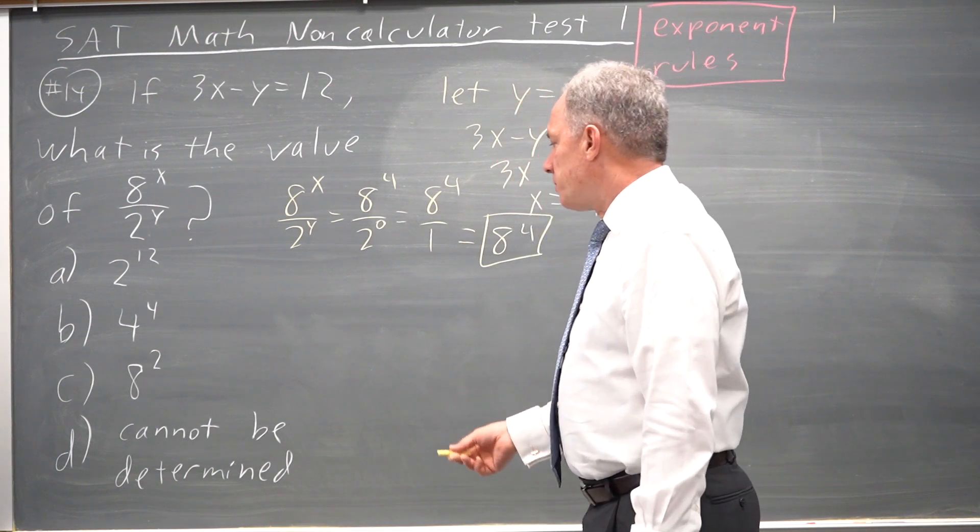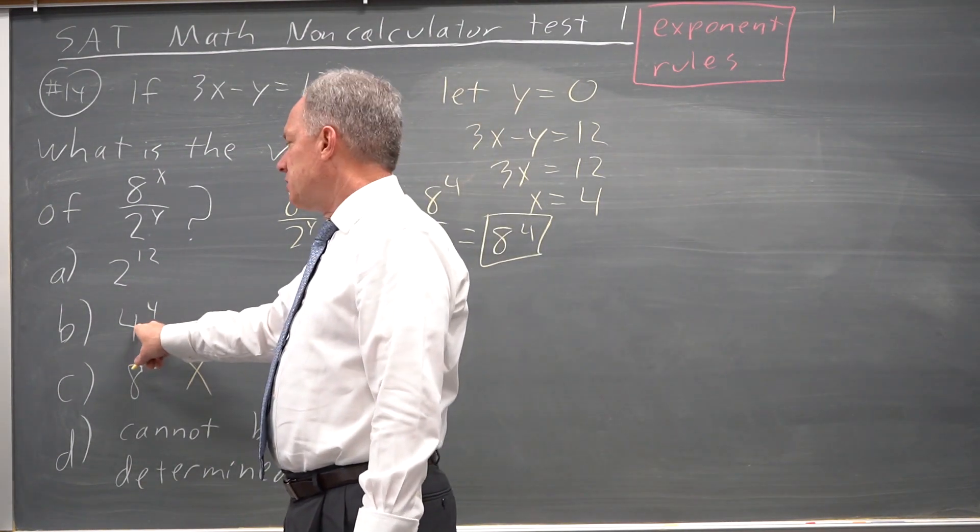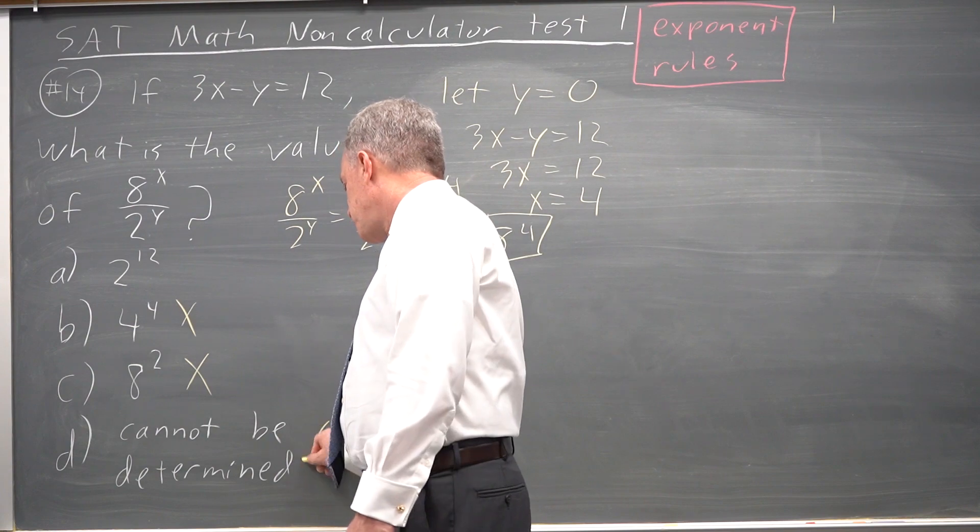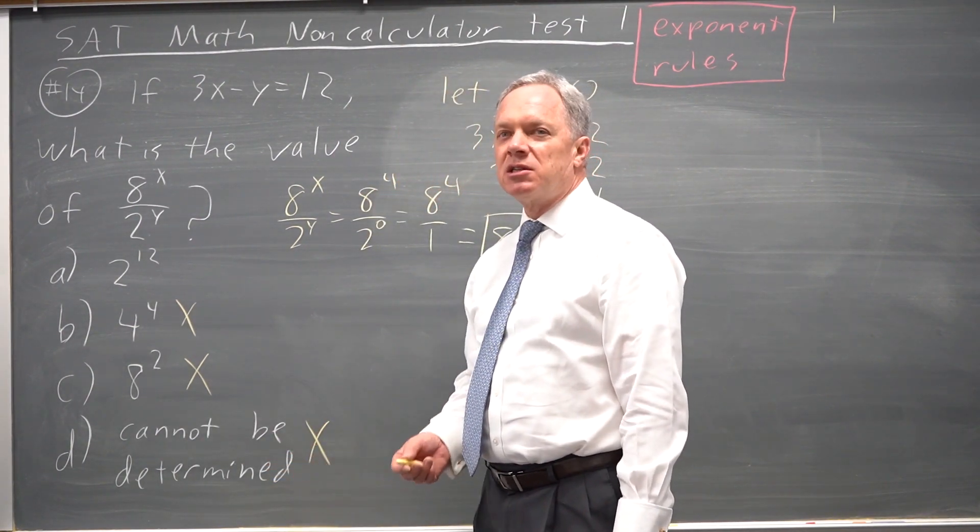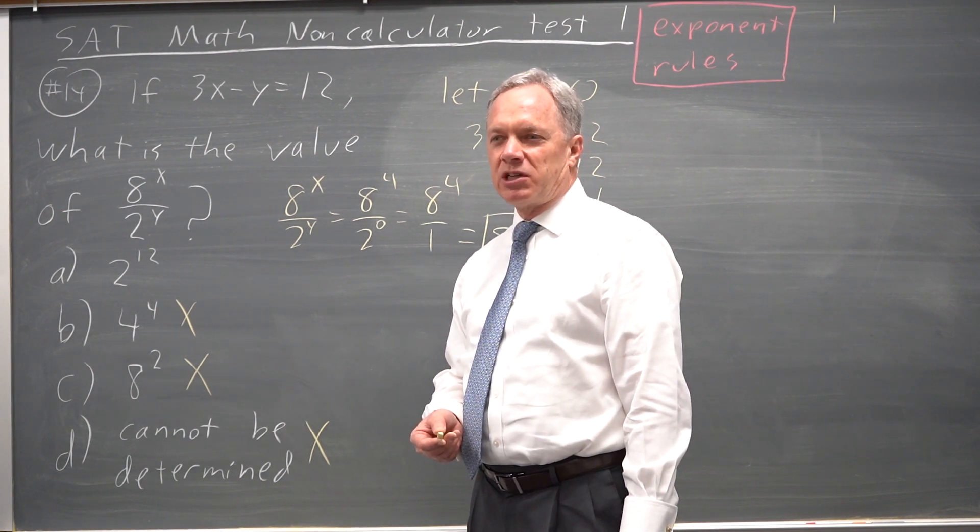Well, 8 to the fourth power is not 8 squared, and it's not 4 to the fourth because 8 to the 4 is more than 4 to the 4. It's not cannot be determined. That is almost always the wrong answer. College Board does not want you to get a question right because you did the math wrong and it didn't match anything.